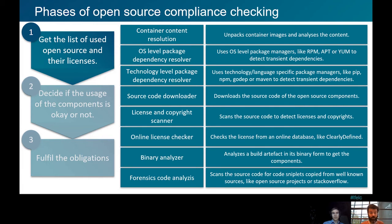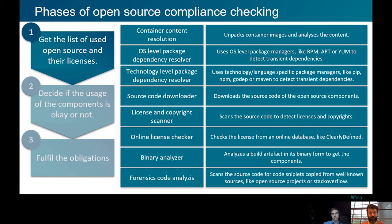Then we need to resolve dependencies, which happens at two levels. The first is operating system level package dependency resolution — using tools the OS provides like RPM, apt, or similar, to discover what packages are installed in the product we want to ship. The second level is technology-level package dependency resolution using language-specific tools like pip, npm, or go-dep to discover what dependencies the given source code is using.